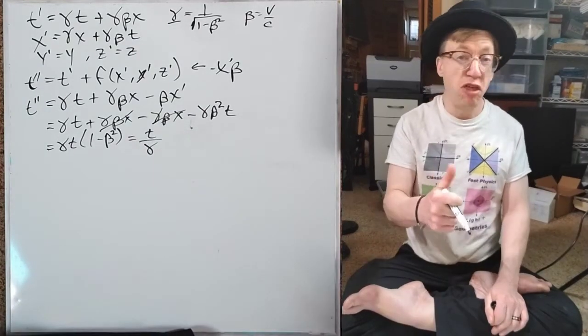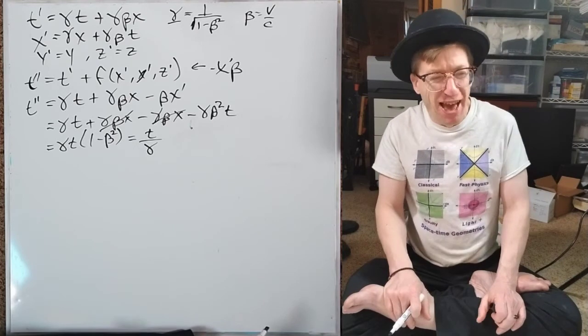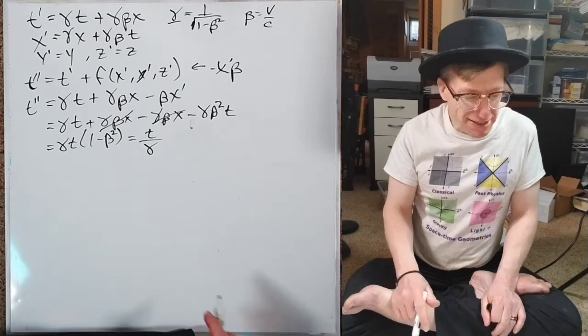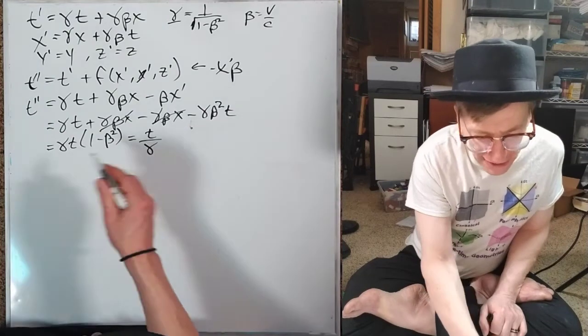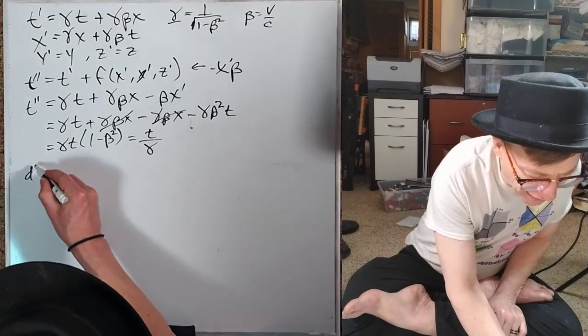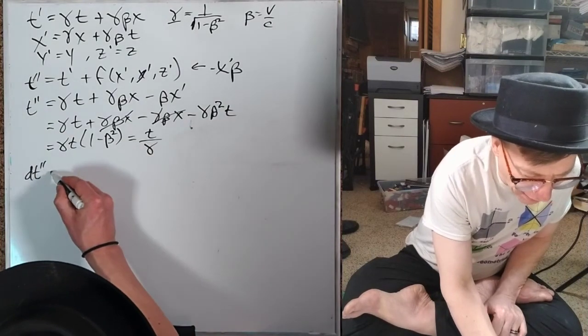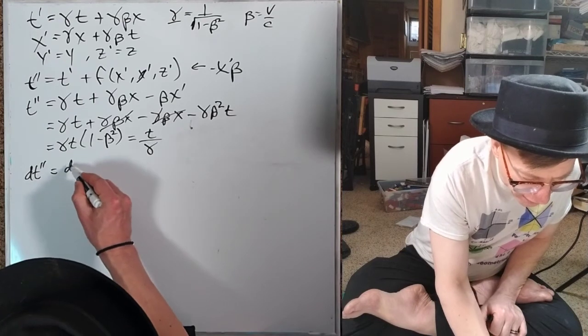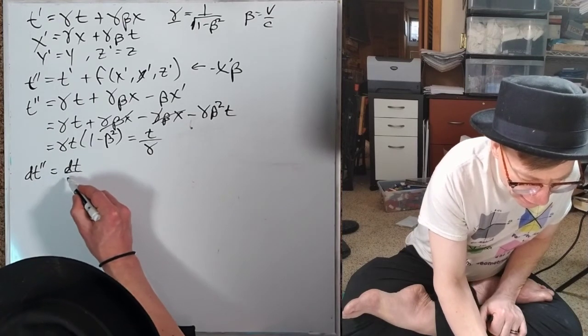So this really equals t over γ. Nice. That's simple. And so in particular, we say, if I were looking at differences of these things, then we know that's like dt'' = dt/γ.